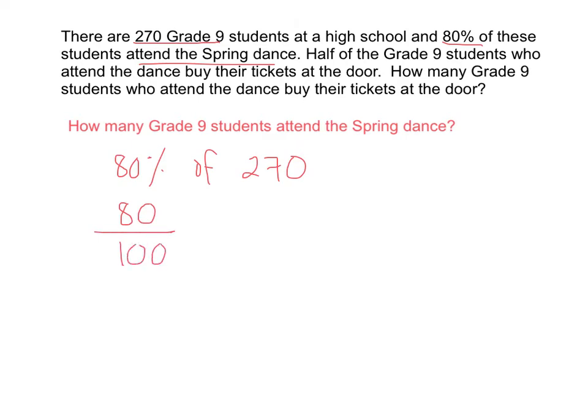How would you represent 270 as a fraction? Well, 270 is a whole number, and any number divided by 1 still equals the number itself — 270 divided by 1 is still equal to 270. So 80 out of 100 multiplied by 270 over 1 will tell us how many students attend the dance.